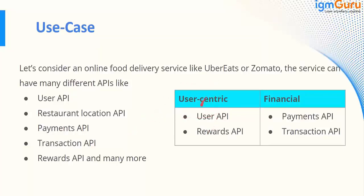So this requirement is clear: if you have APIs, you can club them logically, publish that API group to the Exchange, and people can request for that group.